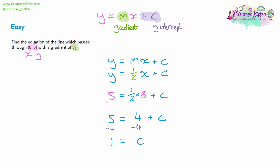We take away four from each side, leaving us with one is equal to c. So now we know the y-intercept — this line crosses the y-axis at one. Our final answer, in the format y equals mx plus c, is y is equal to a half x plus one, since the gradient is a half and c was found to be one.